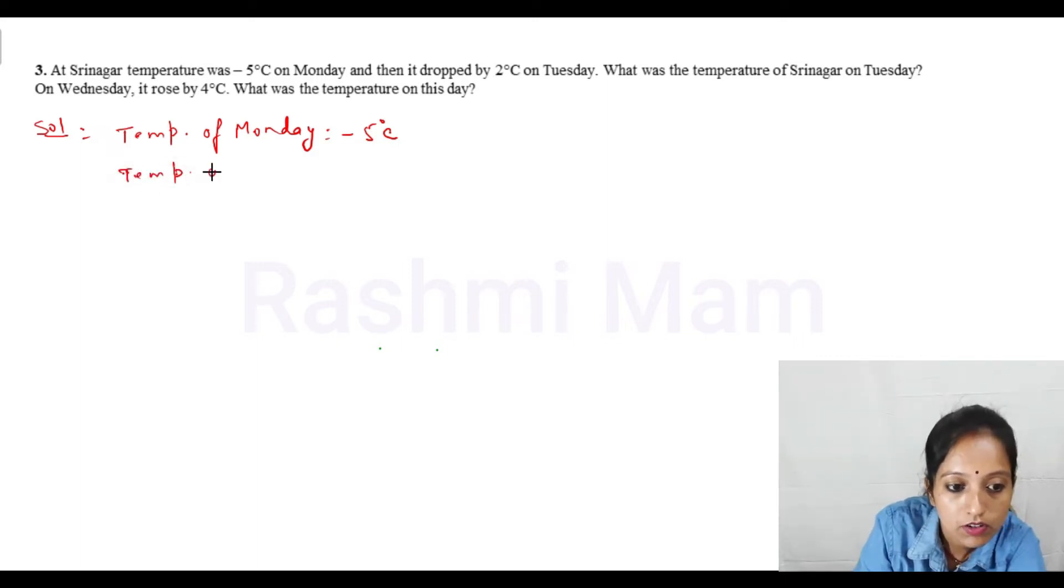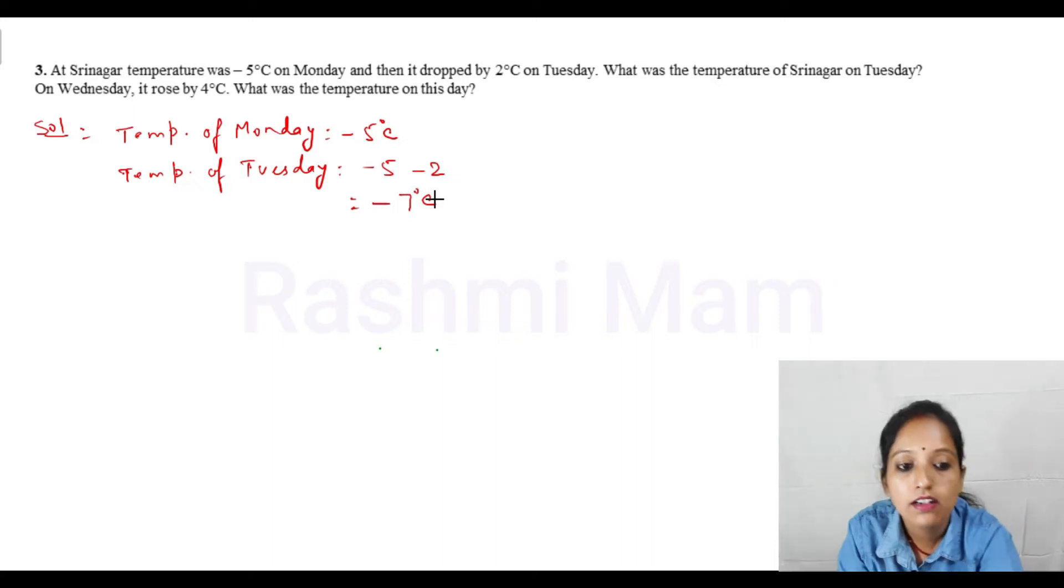Temperature of Tuesday is equal to what? Minus 5 and then minus 2 degrees C. Minus 5 minus 2 - when you have minus and minus, it becomes plus, so the bigger sign is minus. That's minus 5 and 2 equals minus 7 degrees C. So the Tuesday temperature in Srinagar is minus 7 degrees C.